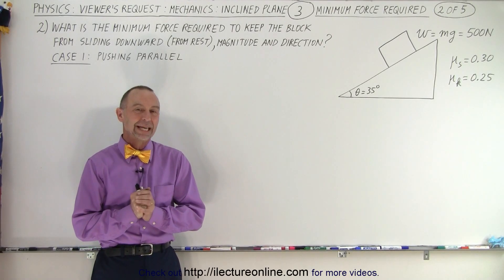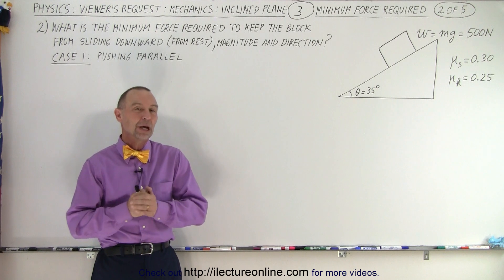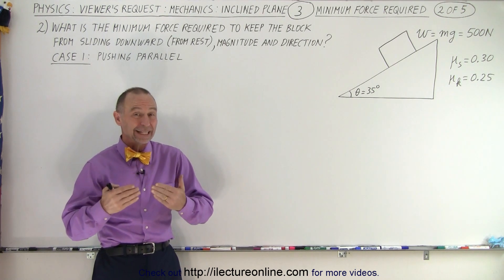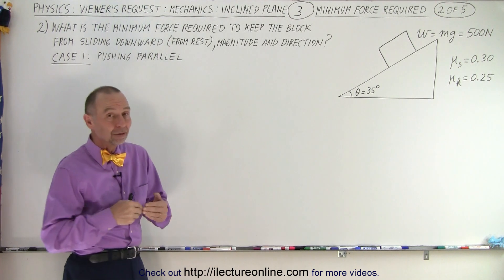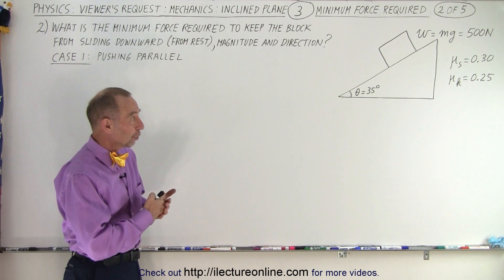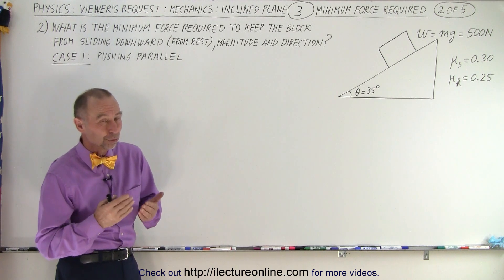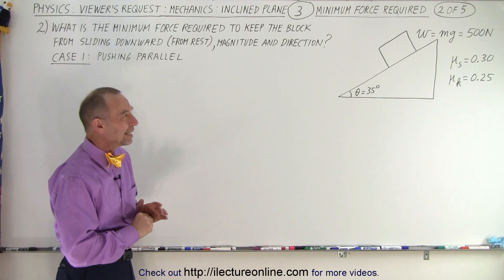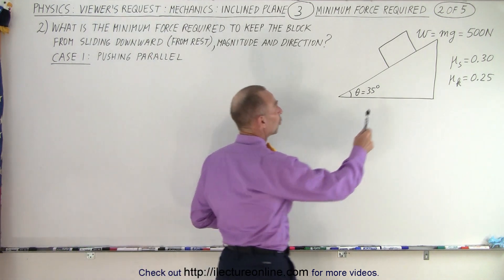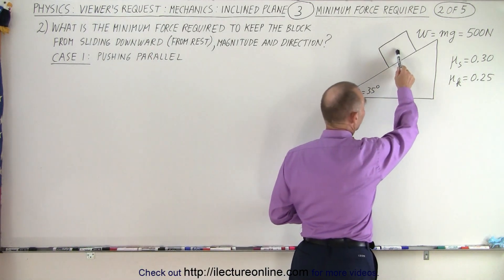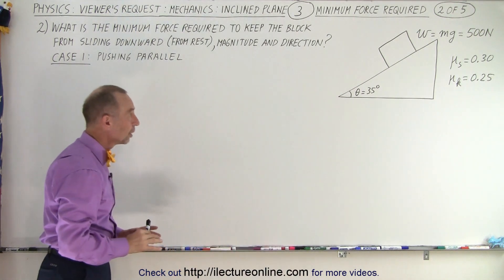Welcome to iLectro Online. In the second part of this set of problems, we're now going to try to keep the block from sliding downward. What's the minimum force required? The coefficient of static friction is 0.3, for kinetic friction is 0.25. The angle is still 35 degrees, and the weight of the block — mass times gravitational acceleration — is equal to 500 newtons.